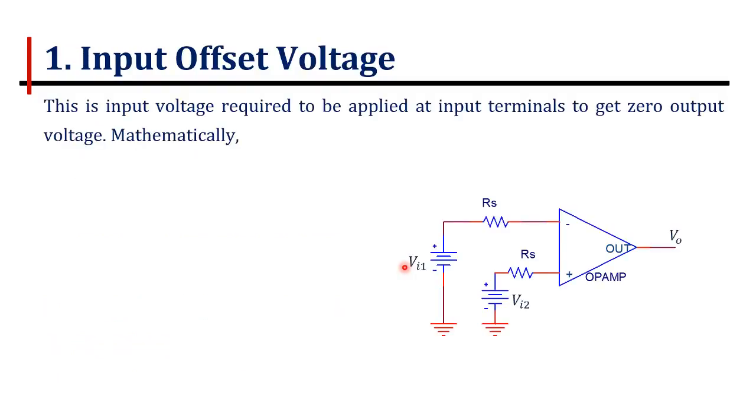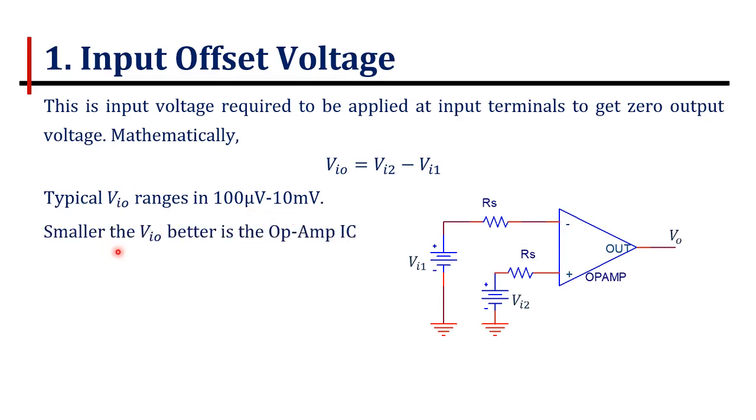Input offset voltage is the voltage required to be applied at the input terminals of the op-amp to get zero output voltage. Mathematically, VIO equals VI2 minus VI1, that is the voltages applied at the non-inverting terminal and inverting input terminal. The typical value of VIO ranges somewhere between 100 microvolts to 10 millivolts. Smaller the value of VIO, better is the op-amp IC.